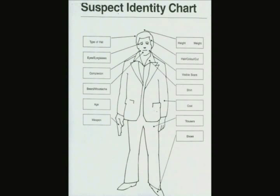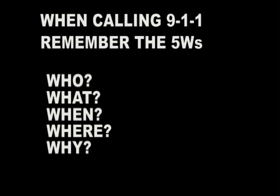Instead of just saying 'a green minivan,' try to get a licence plate or even part of one — maybe three of the letters, or note that it had bike racks or ski racks, or one tail light was off. That kind of detail helps officers identify which green minivan you're talking about. Clothing descriptions, direction of travel — think of it like writing a newspaper article: who, what, why, where. Stay on the phone as long as they need you to guide the officers to the location.